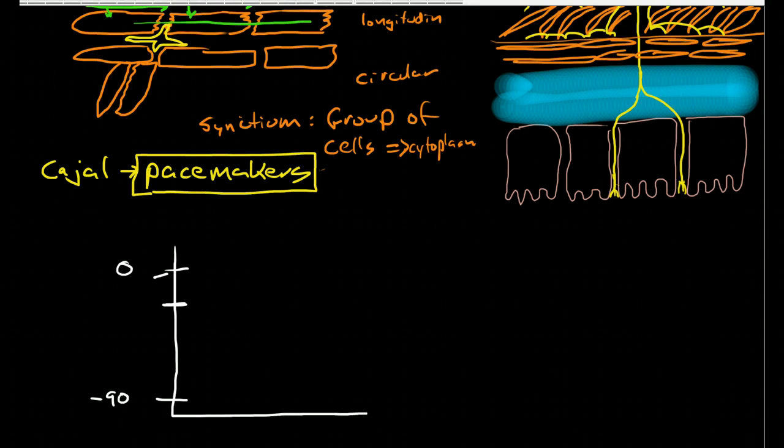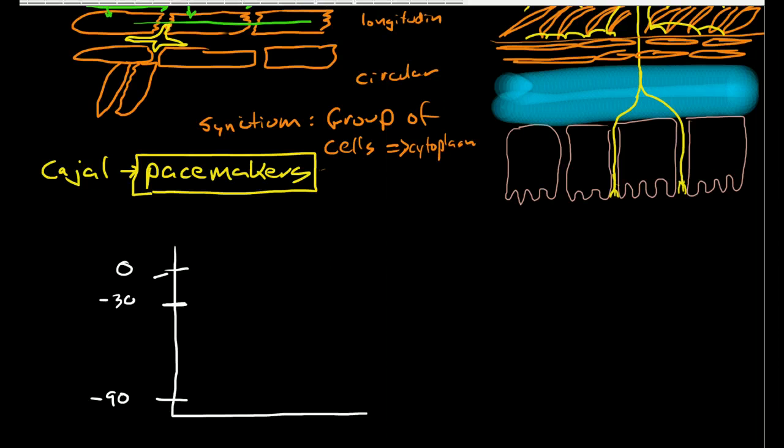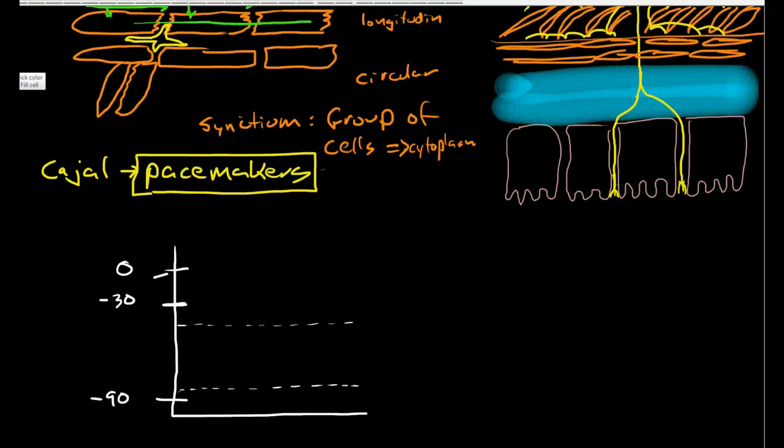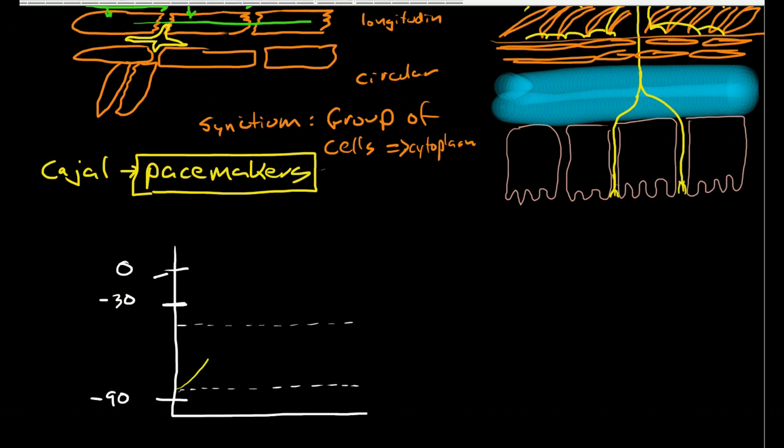We may have a threshold that initiates an action potential at minus 30. What the Cajal cells do is they set up a slow wave pattern that moves between negative 40 and the resting potential, probably around negative 60 to negative 70. The mechanism works very similar to the pacemaker cells of the SA node where you have slow sodium leak.